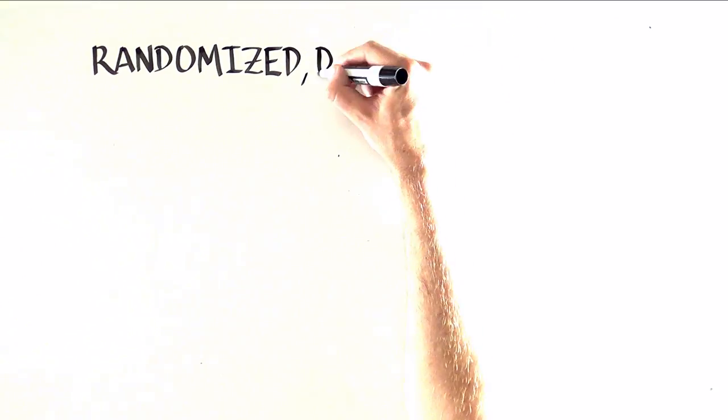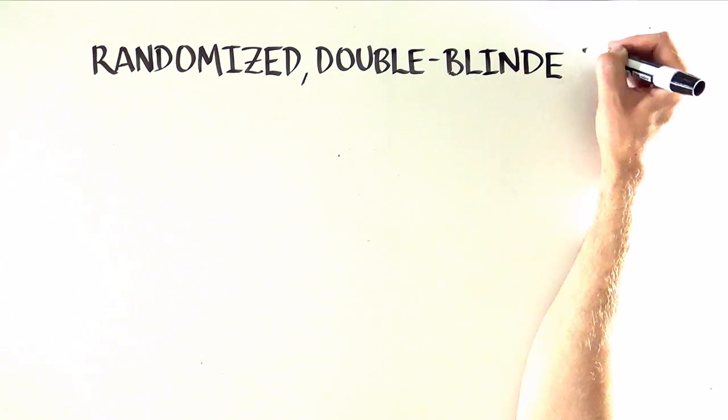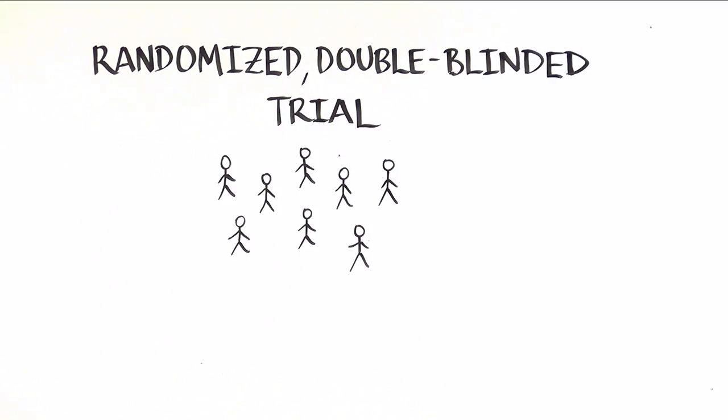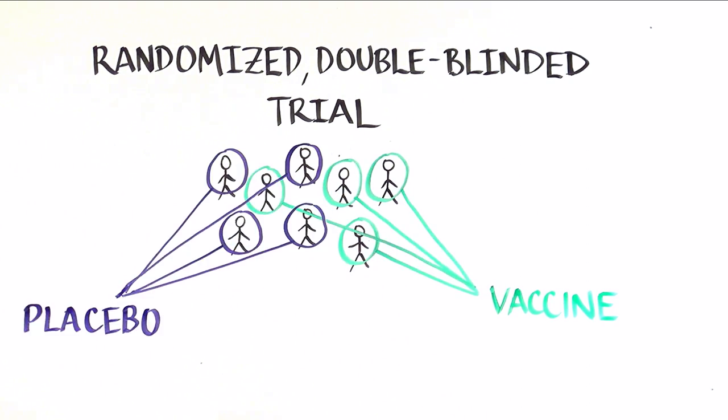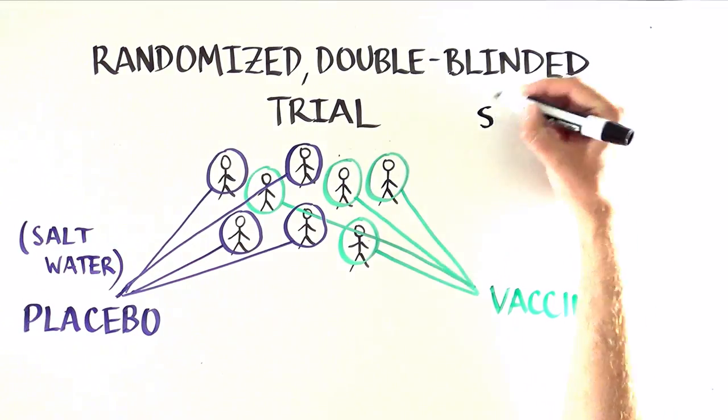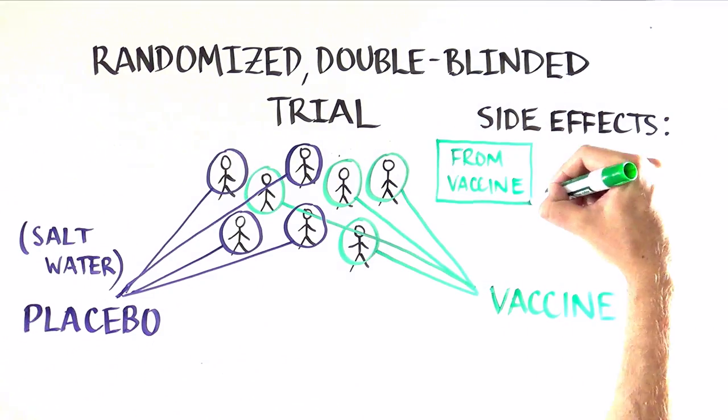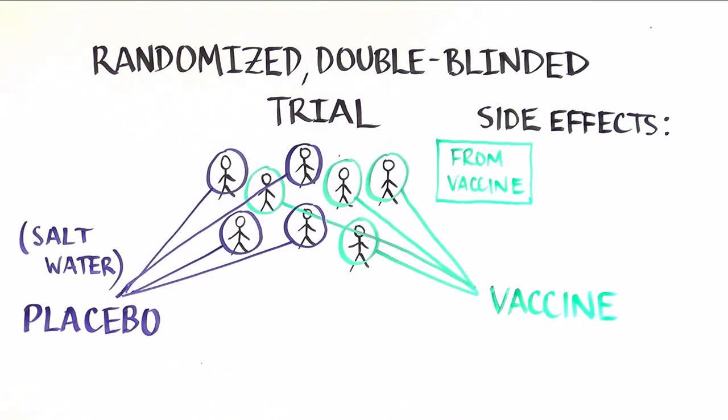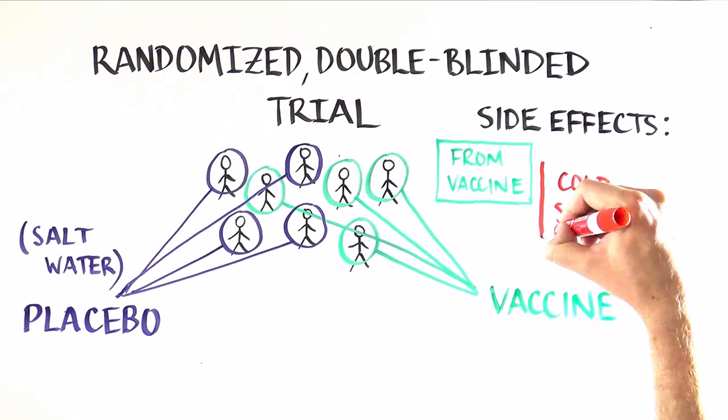Next, we start what is called a randomized double-blinded clinical trial. What that means is that after volunteers enroll in a study, a computer randomly decides whether they will get the vaccine or the placebo, which is usually just salt water. We do this to separate out side effects that are due to the vaccine from those that are just happening to people in the community at the same time, like the rate of cold symptoms or headaches.